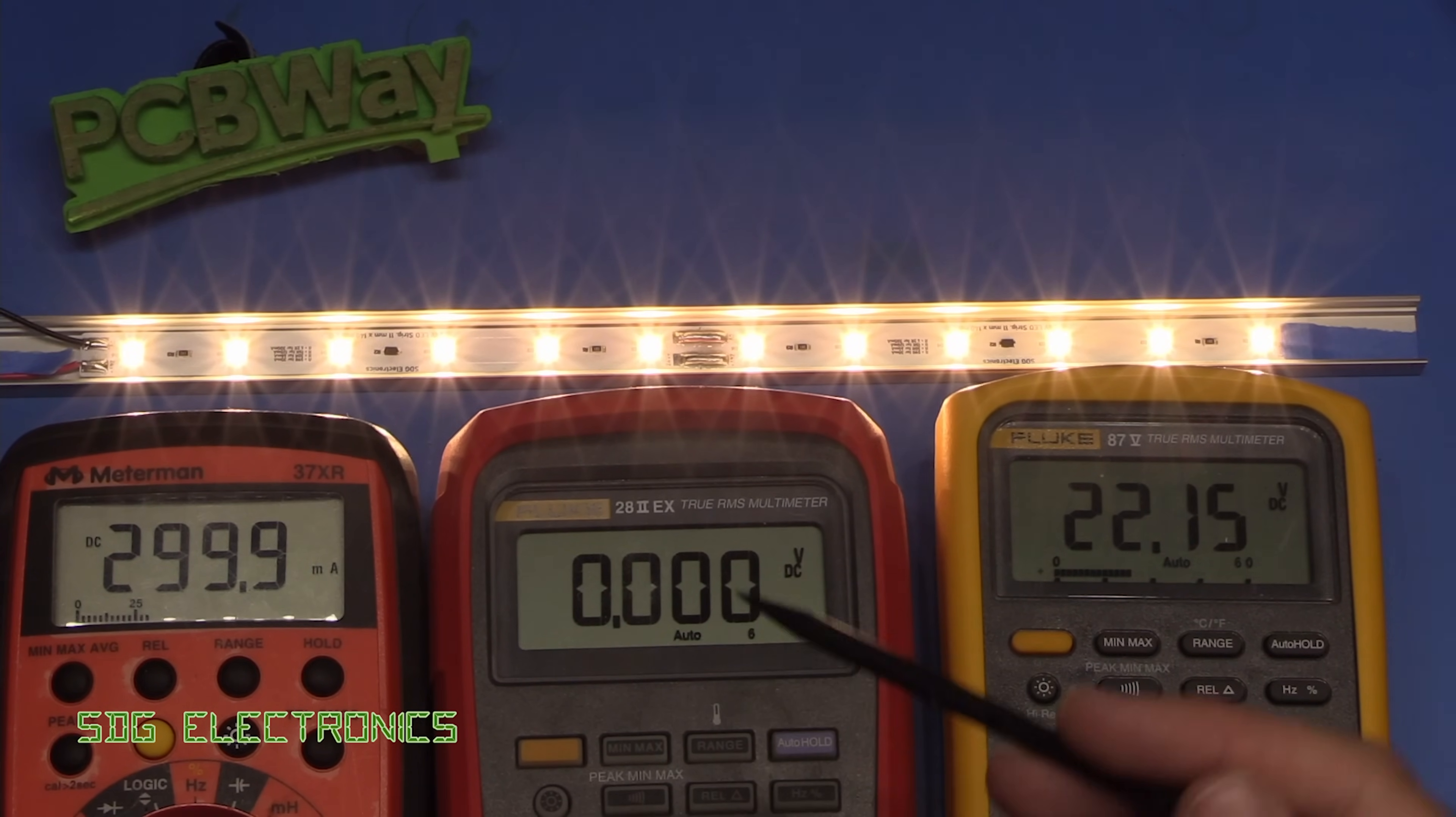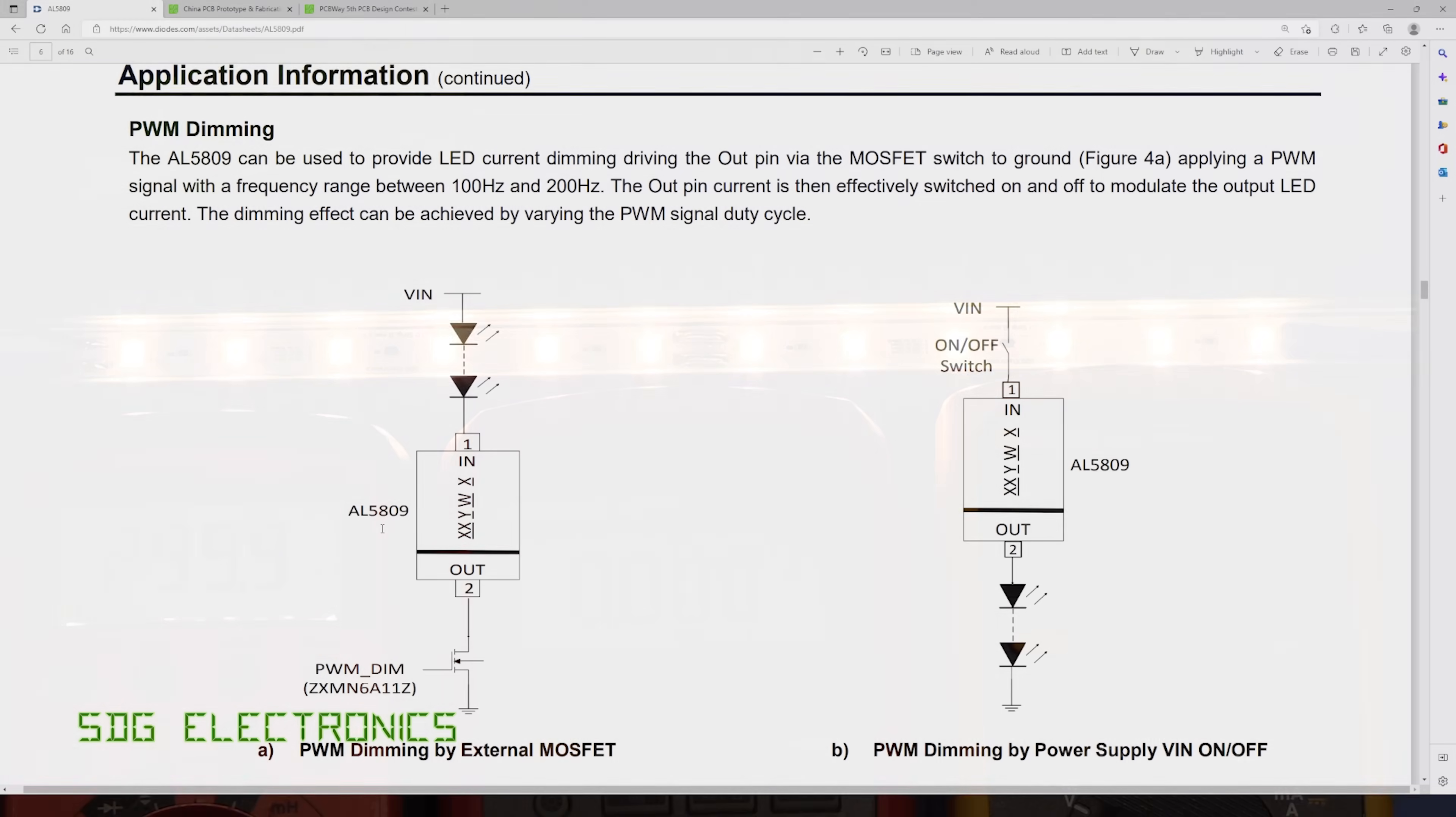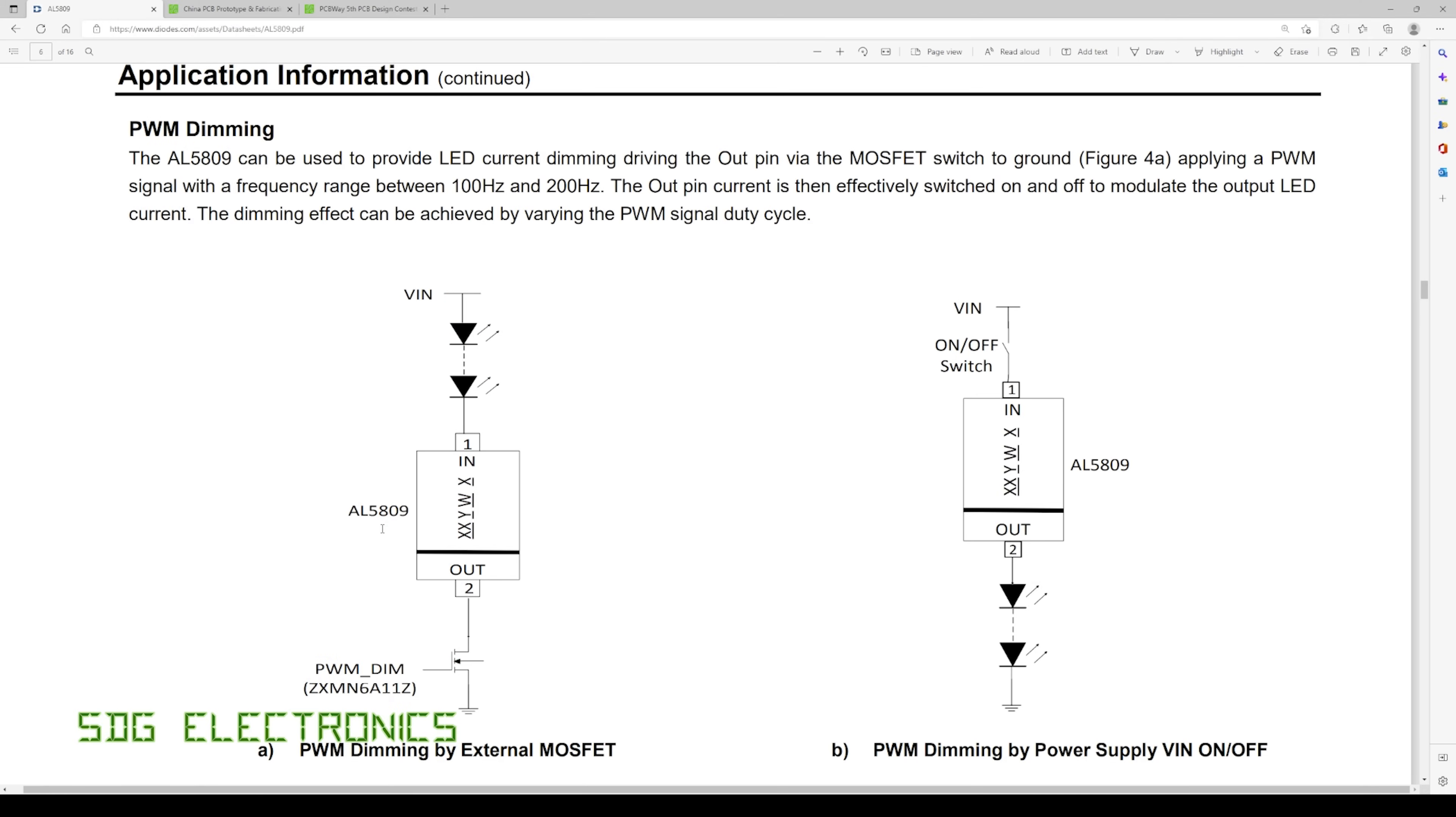So the datasheet has a bit of information on how to achieve PWM dimming with the AL5809 and it recommends a PWM frequency of between 100 and 200 hertz which is quite low.